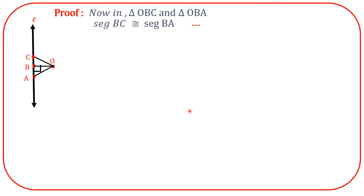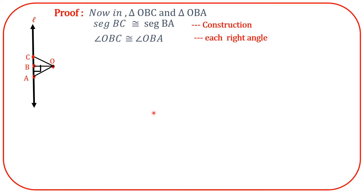Write down the reason: construction. Angle OBC is congruent to angle OBA — reason: each is a right angle, since OB is perpendicular to line L. Segment OB is congruent to segment OB — reason: common side. By SAS test: